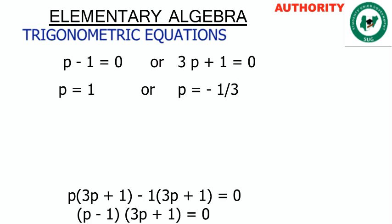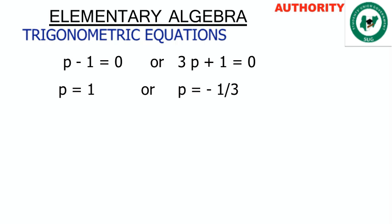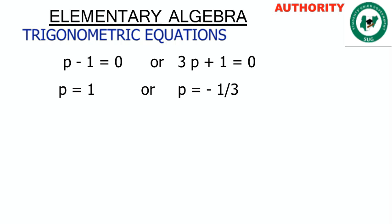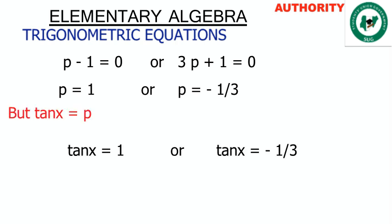Setting each factor to zero: p minus 1 = 0 gives p = 1, and 3p + 1 = 0 gives 3p = minus 1, so p = minus 1 over 3. Remember, p represents tanx, so we have tanx = 1 or tanx = minus 1/3.